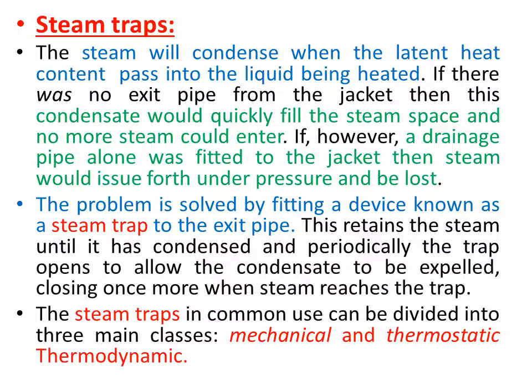The steam trap: steam will condense when the latent heat content passes into the liquid being heated. If there was no exit pipe from the jacket, the condensate would quickly fill the steam space and no more steam could enter. If, however, a drainage pipe alone was fitted, the problem is solved by fitting a device known as the steam trap to the exit pipe. This retains the steam until it has condensed, and periodically the trap opens to allow the condensate to be expelled.